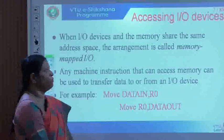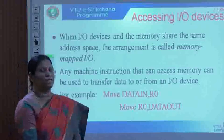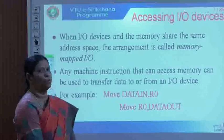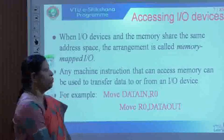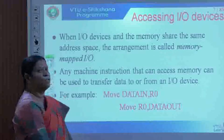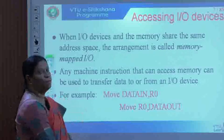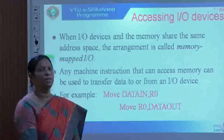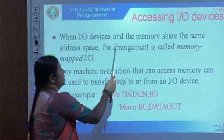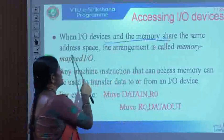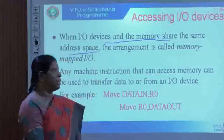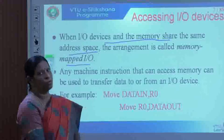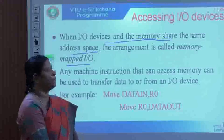There are two forms of accessing the I/O device. The first is called memory mapped I/O. When the I/O device and the memory both share a common address space, this arrangement is called memory mapped I/O — because the I/O address space is mapped to the memory address space.